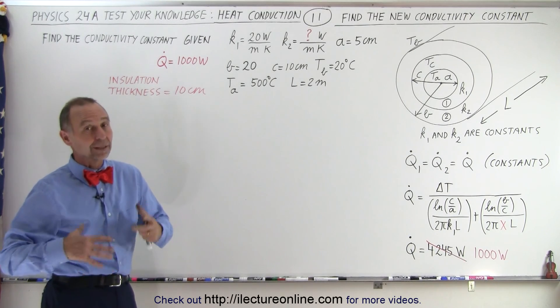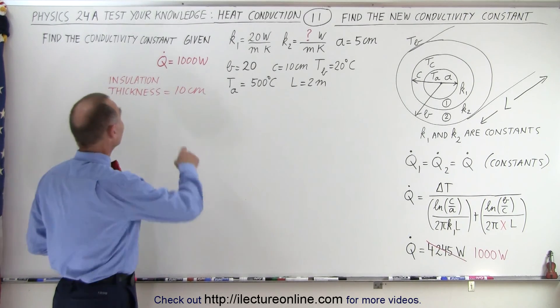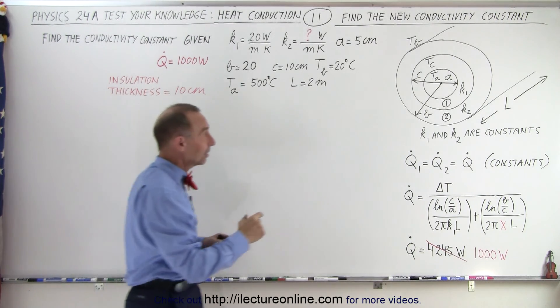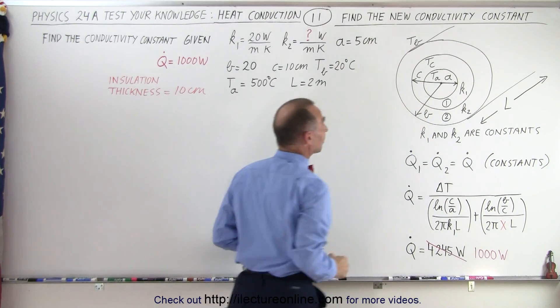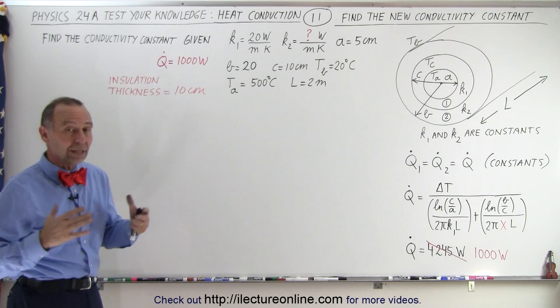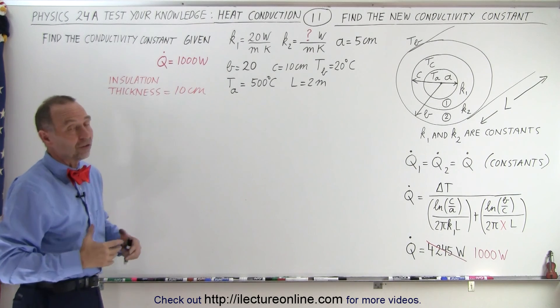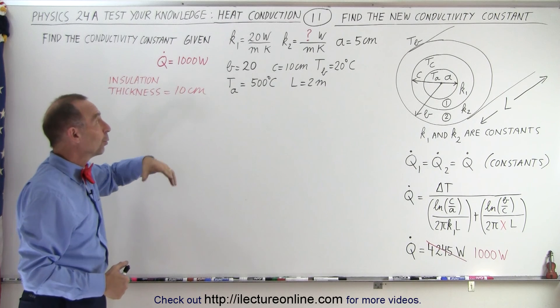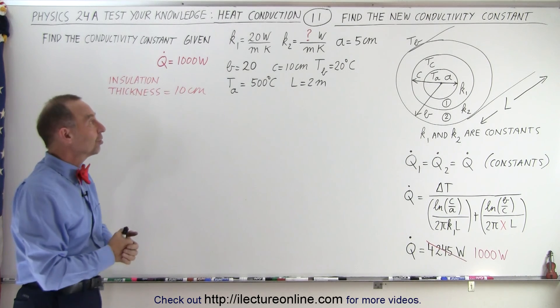So now we're going to do things a little bit differently. We're going to leave the thickness of the insulation at 10 centimeters, that's the second layer, from the boundary down to the outside of the cylinder, and we're still going to demand that we want the heat flow to be a thousand watts.